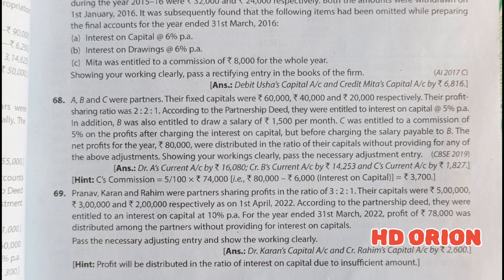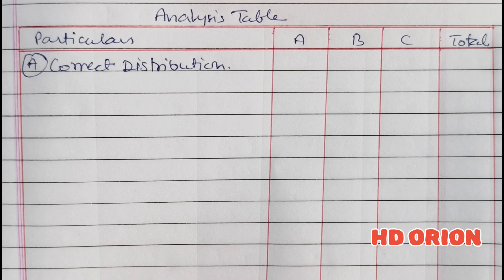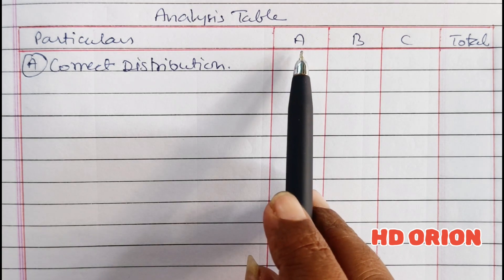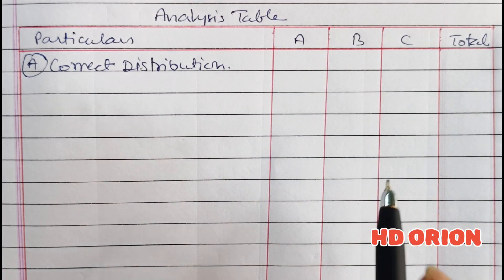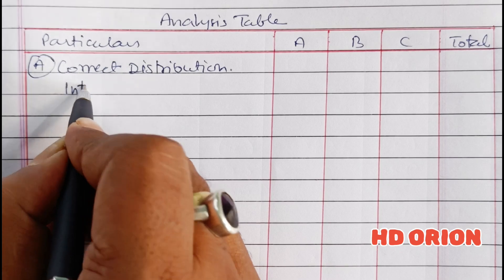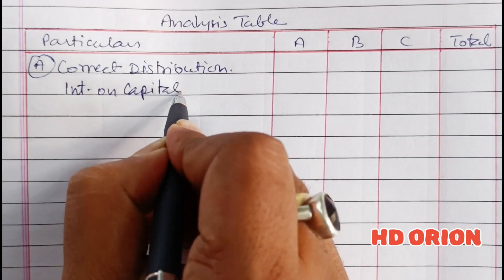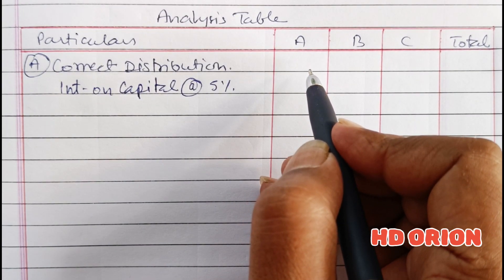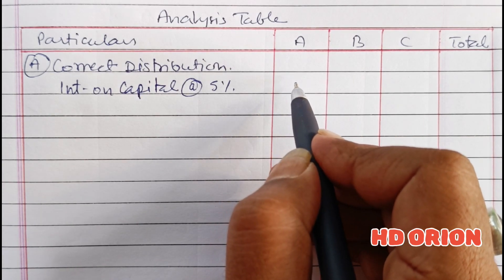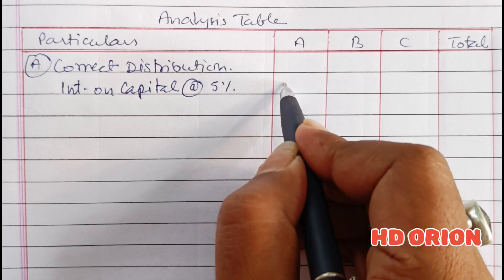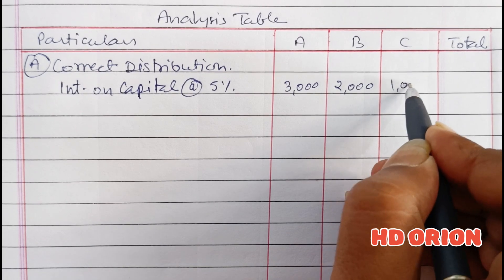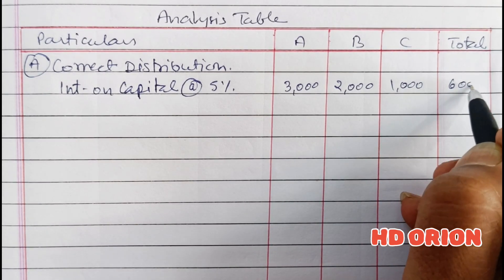So we will prepare the analysis table first and calculate the correct distribution — what was supposed to be received by the partners. First is interest on capital at 5% per annum; their capitals are fixed. So 60,000 × 5% = Rs. 3,000; 40,000 × 5% = Rs. 2,000; and 20,000 × 5% = Rs. 1,000. Total interest on capital is Rs. 6,000.